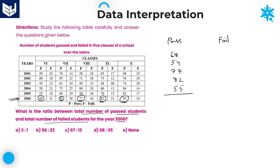Add all the values. 7 plus 7 is 14; 14 plus 4 is 18; 18 plus 8 is 26. And next, it is 11, 18, 18 plus 10 is 28, 28 plus 5 is 33. Total passed students: 336.